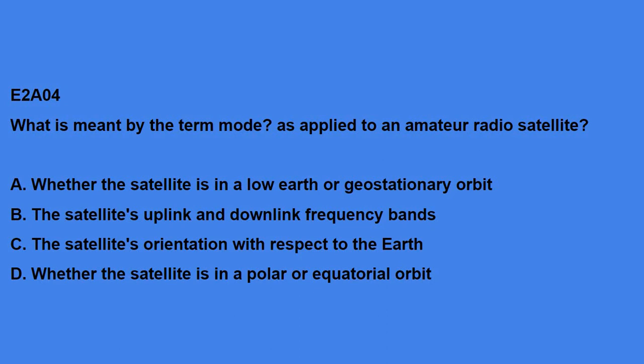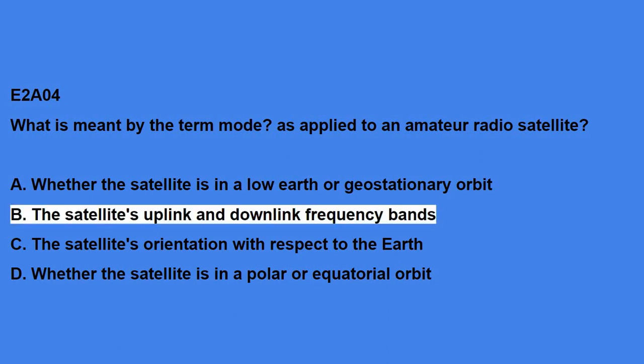E2A03: How is a signal inverted by an inverting linear transponder? The answer is: the signal is passed through a mixer, and then the difference rather than the sum is transmitted. E2A04: What is meant by the term 'mode' as applied to an amateur radio satellite? The answer is: the satellite's uplink and downlink frequency bands.